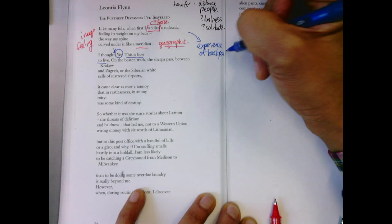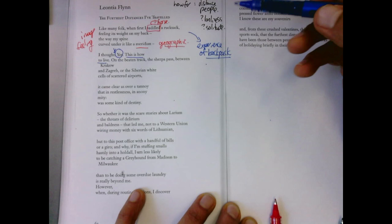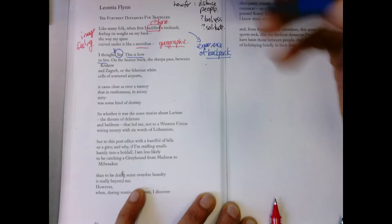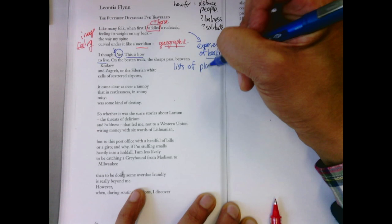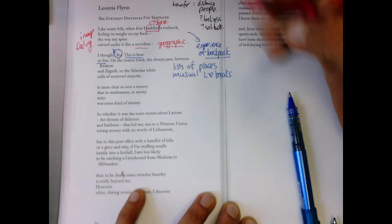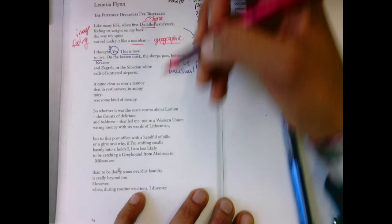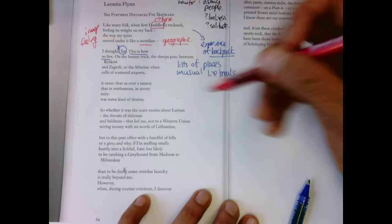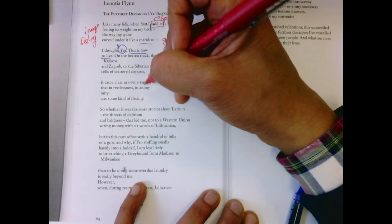On the beaten track, the Sherpa Pass between Krakow and Zagreb, or the Siberian white cells of scattered airports. So here we start the lists of places. The unusual line breaks emphasize maybe the Sherpa, the places that she's going. This is the classic part.